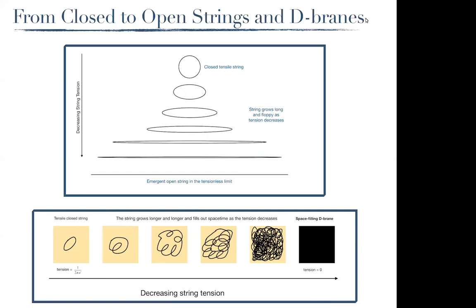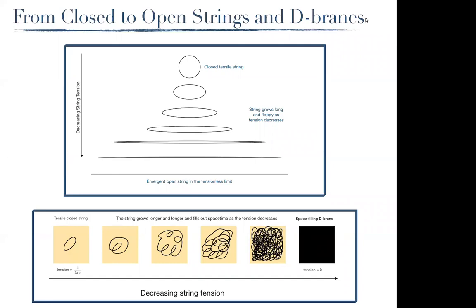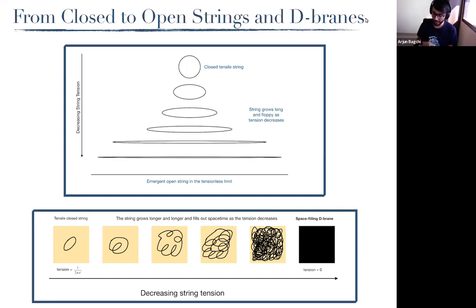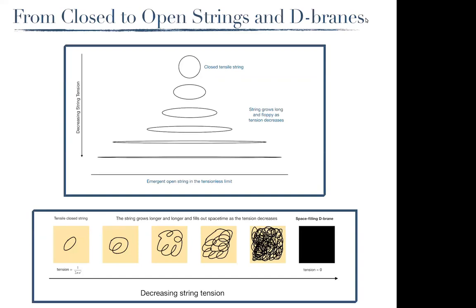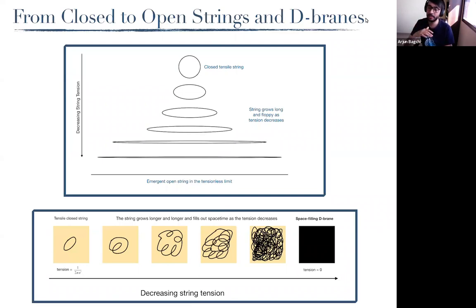As the tension decreases, the string grows long and floppy, and at zero tension an emergent open string appears. In terms of branes, the string starts compact and grows longer until it fills the whole of spacetime as tension decreases. Regarding the long open string — yes, it is along the null direction, so the endpoints are null-separated. You can think about this as a string of massless point particles which still retain memory that it is a string. On the worldsheet, the light cones close up. In spacetime, these worldsheets will be null surfaces — analogous to how massless point particles move along null geodesics.